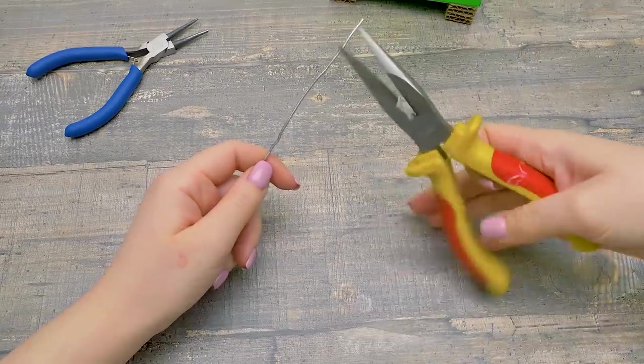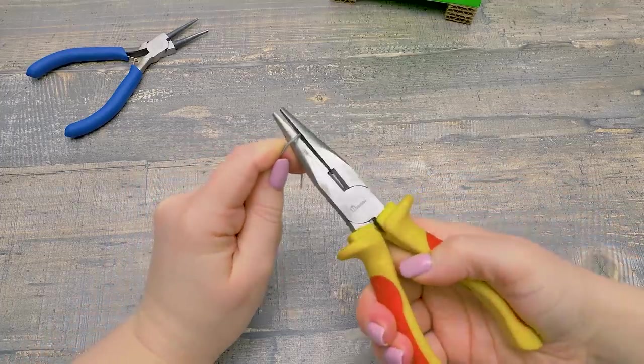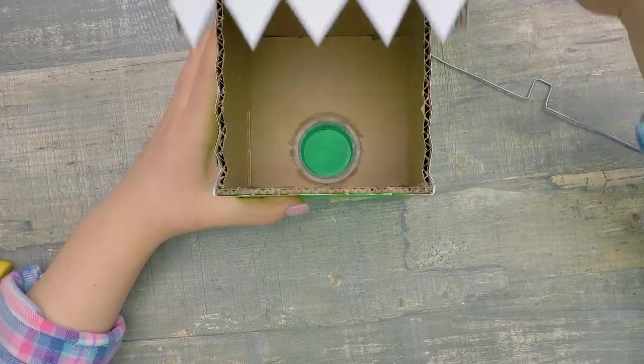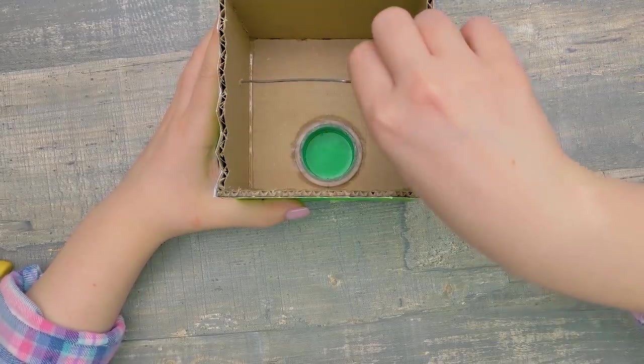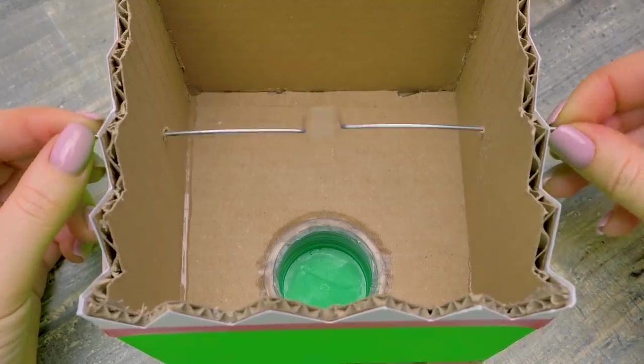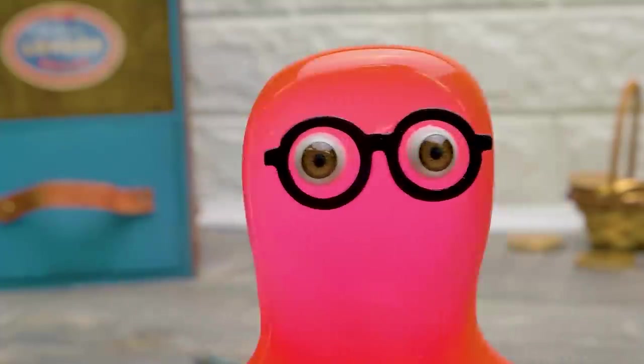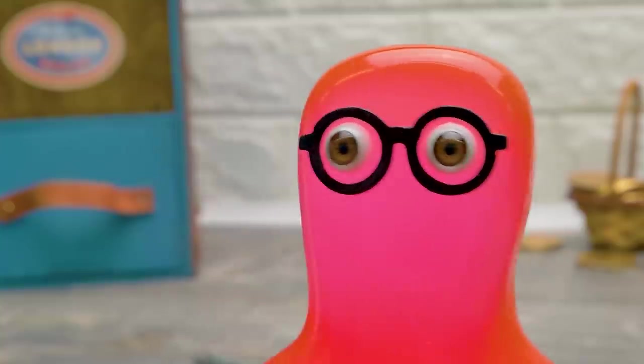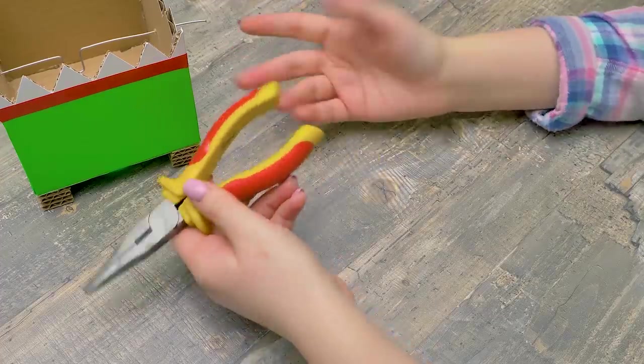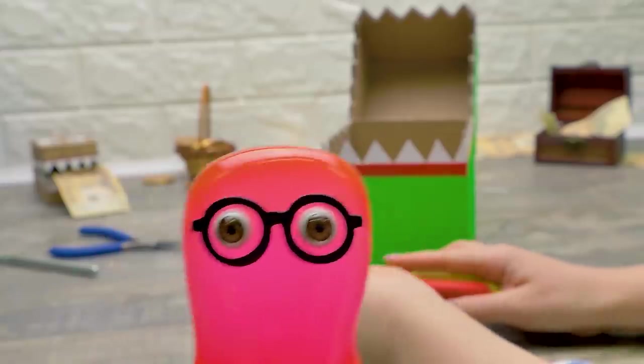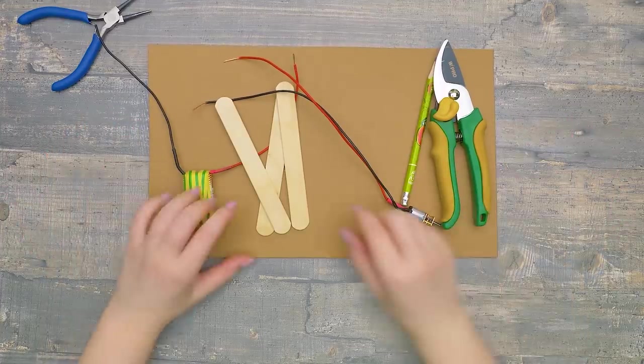Now we can start making the mechanism for our automatic money box. I need to bend this wire a few times. Be careful with pliers, guys. This is what we get. Now I need to secure the wire inside the money box in the openings I made in advance. If you're watching our videos attentively, write how many coins I used in this video!